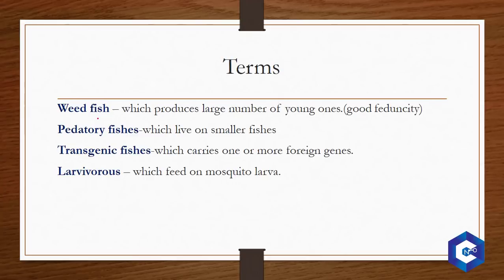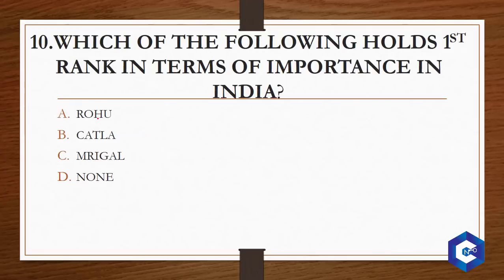The last question: which of the following holds first rank in terms of importance in India? In India, Rohu has the utmost importance. Remember that Rohu holds first rank, followed by Katla and then Mrigal. The answer to this question will be option A — Rohu.